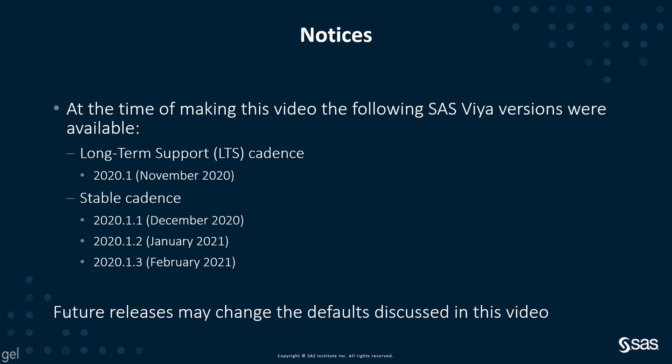You also need nodes for non-SAS or supporting software, so have a third-party node pool. Finally, at the time of making this video, certain SAS Viya versions were available, and future releases may change some of the defaults discussed here. In the next video, we will look more deeply at the deployment topologies and how we can control them.